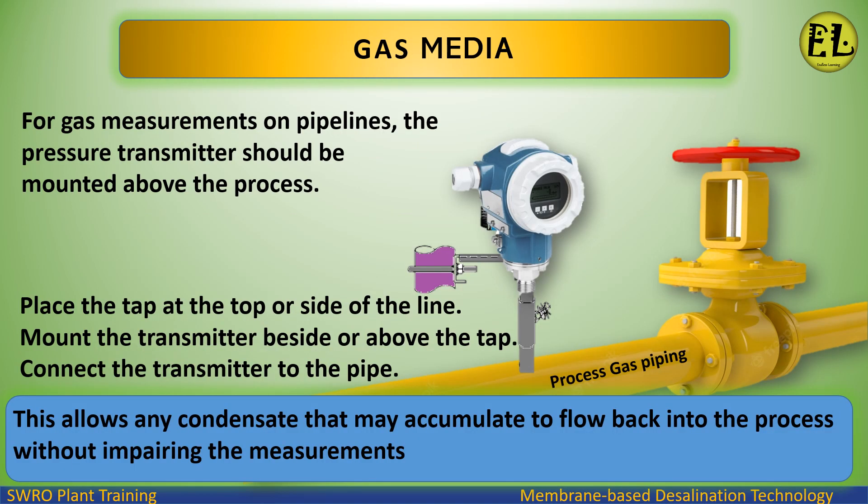Gas Media: For gas measurements on pipelines, the pressure transmitter should be mounted above the process. Place the tap at the top or side of the line, and mount the transmitter beside or above the tap, then connect the transmitter to the pipe. This allows any condensate that may accumulate to flow back into the process without impairing the measurements.